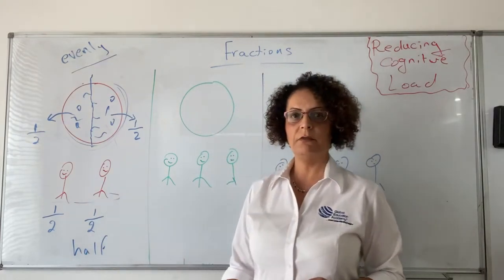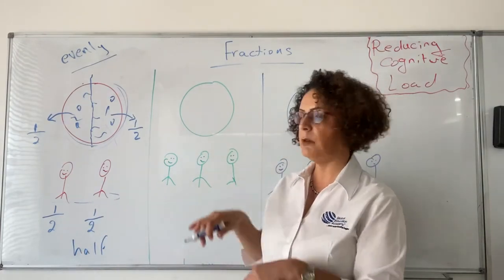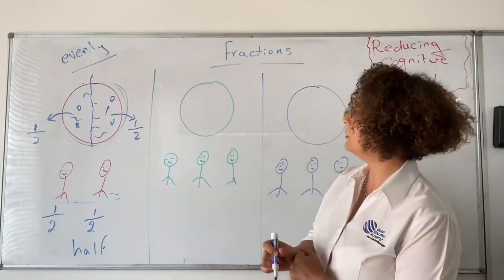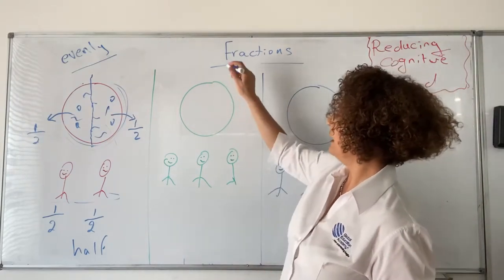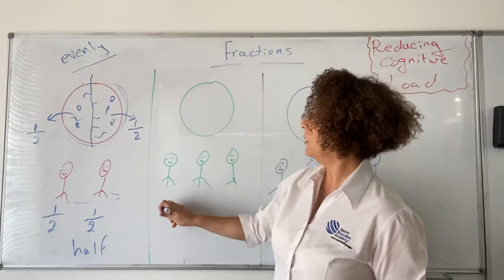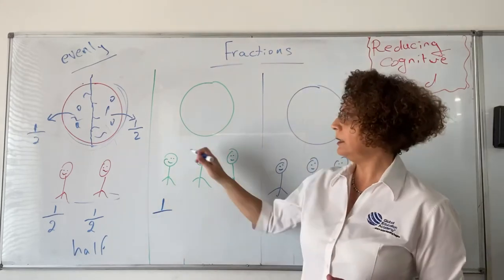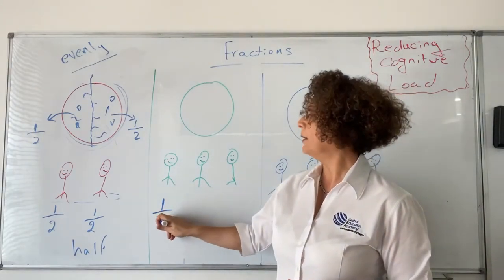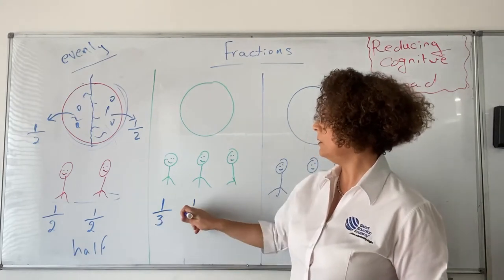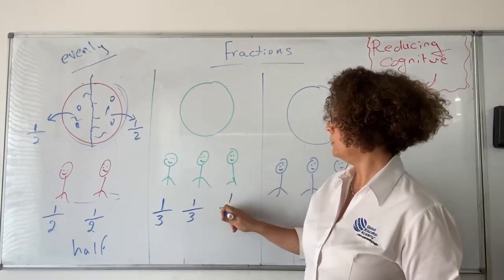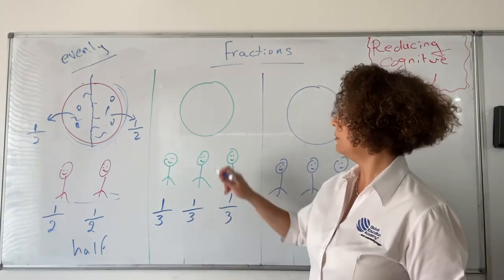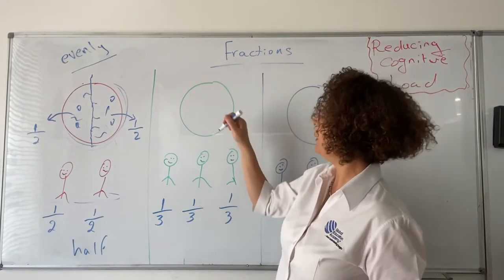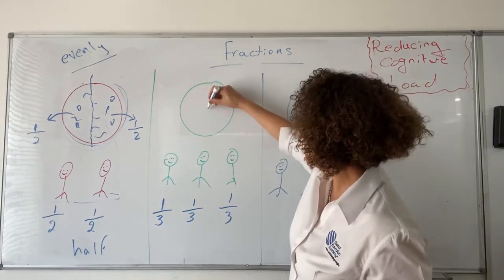Now let's have a look at when we share between three people. We're still sharing that one pizza and each one will get one out of three. So let me cut this pizza. When we cut a round pizza, we go from the center.